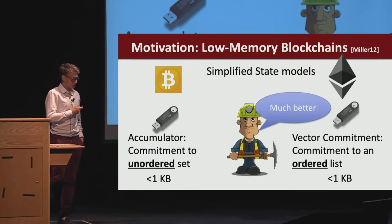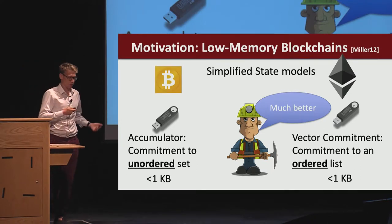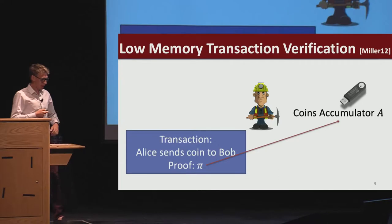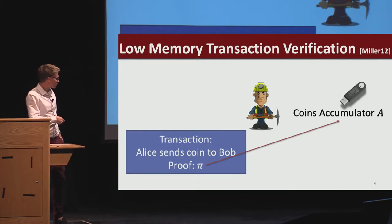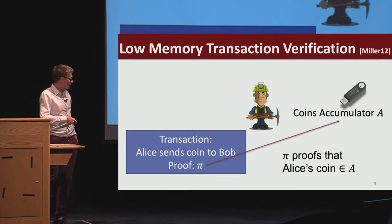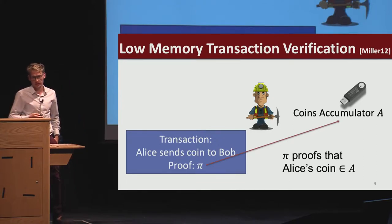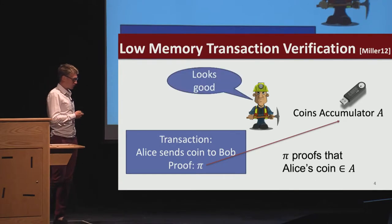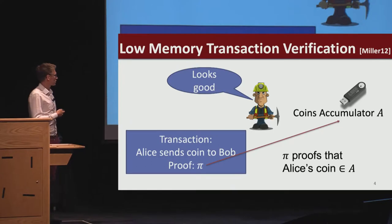The motivation is: can we get a low-memory blockchain where instead of storing the state itself, the miner just stores a short commitment? In the Bitcoin case, this would be a commitment to an unordered set—this is an accumulator. In the Ethereum case, this is a vector commitment, which is a commitment to an ordered list. The transaction would then include an additional proof stating that the coin Alice is trying to send to Bob is in this accumulator of previously unspent coins, and the miner can accept it. These commitments can be less than a kilobyte.